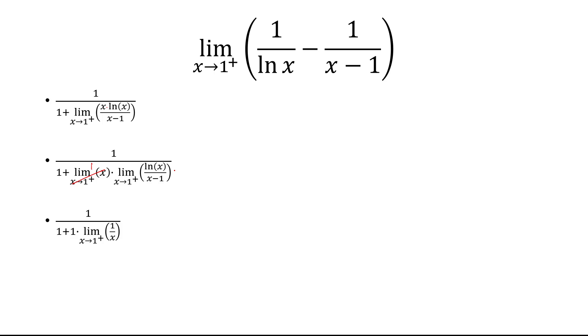And notice, if I plug in x equals 1, I get 0 over 0. So I have to use L'Hopital's rule once again. The derivative of ln of x is 1 over x. The derivative of x minus 1 is 1. So this limit just turns into 1 over x. And if I plug in x equals 1 here, I end up with 1.